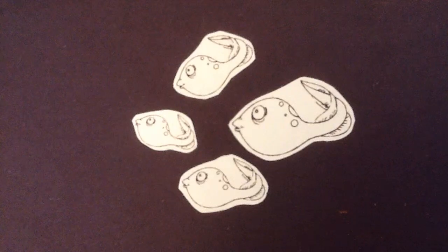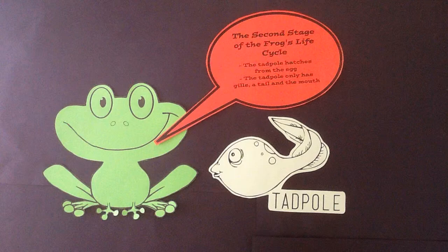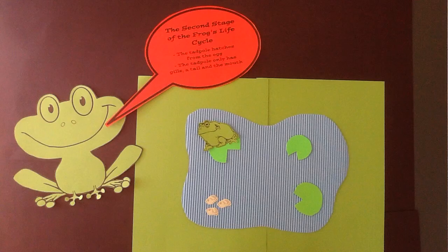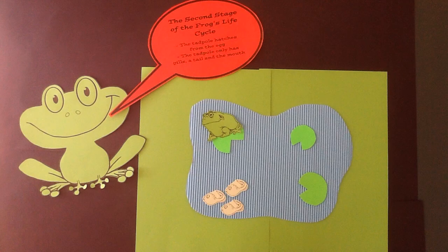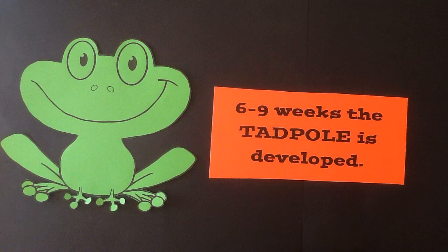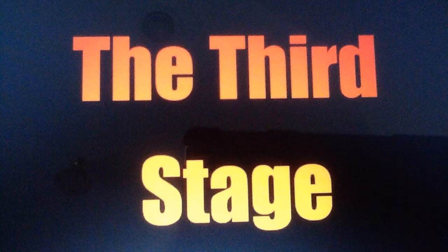The second stage of the frog's life cycle is eggs hatching into tadpoles. The tadpole has no arms or legs, only a tail. The tadpole protects itself by hiding in water plants. After six to nine weeks, the tadpole is fully developed.